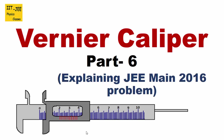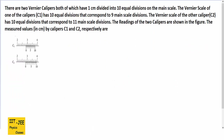Hello friends. In this video we will discuss a JEE problem from the 2016 main paper. The problem says there are 2 vernier calipers which have 1 cm divided into 10 equal divisions on the main scale. The first vernier caliper has 10 equal divisions corresponding to 9 main scale divisions, and the second caliper's vernier scale has 10 equal divisions corresponding to 11 main scale divisions. A picture is given showing measurements, and we have to find the final reading of both vernier calipers.